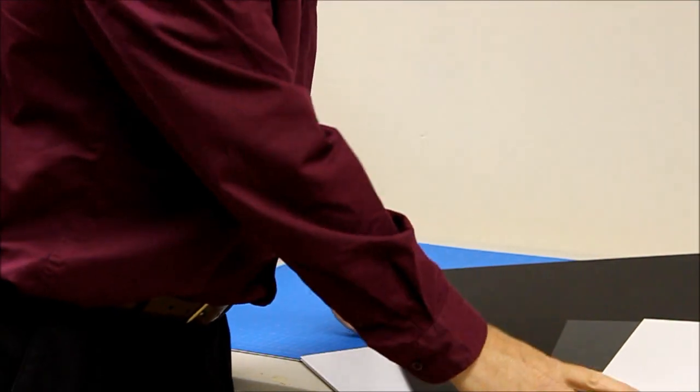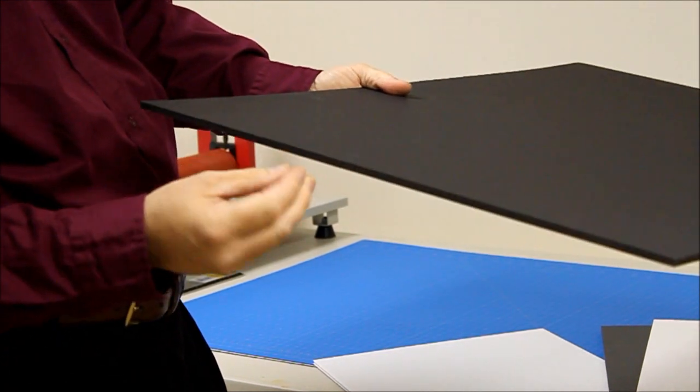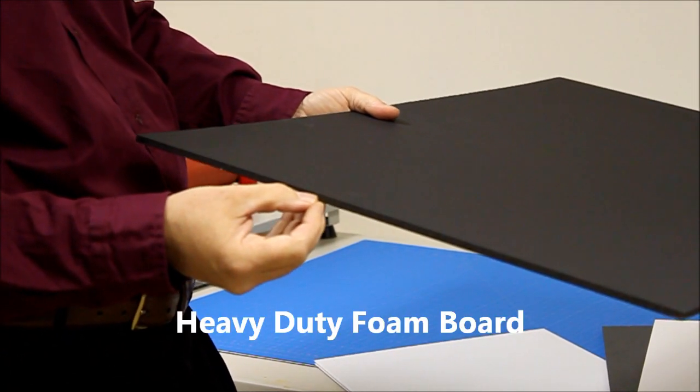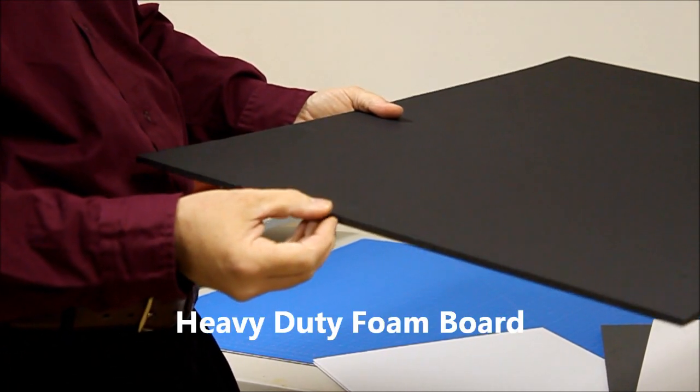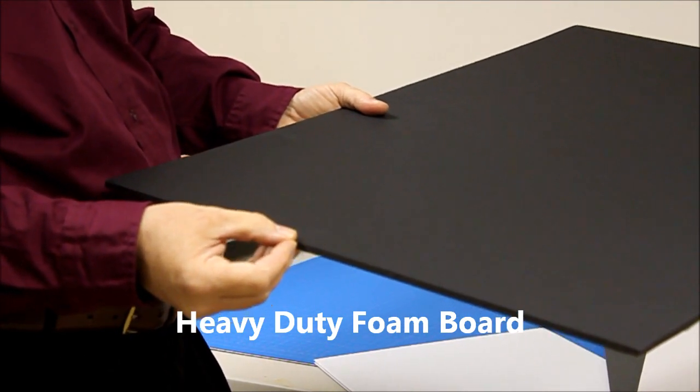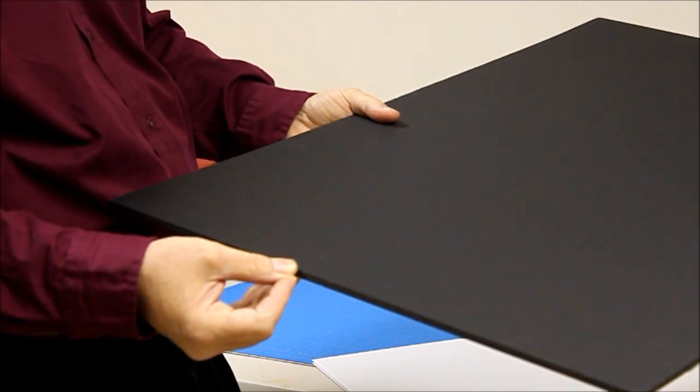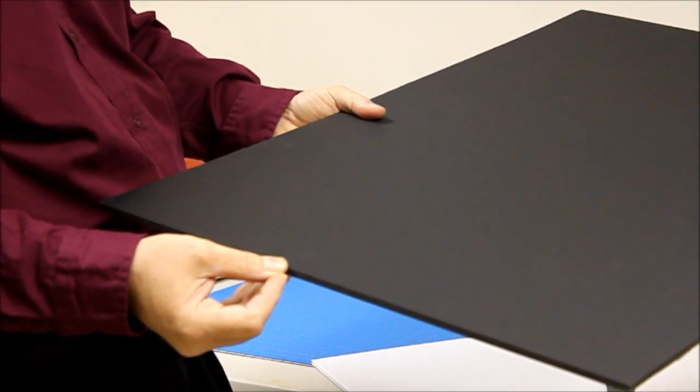The second type of board that we also have, which has a foam center board, is heavy duty board, which is basically the same foam center, but instead of paper on the surface, it has a paperboard surface. It's SPS board, which is the same type of board that is used to make toothpaste boxes and thin walled boxes.